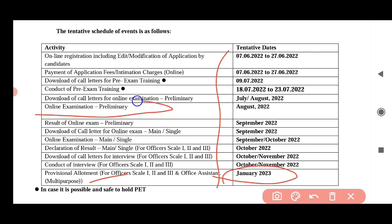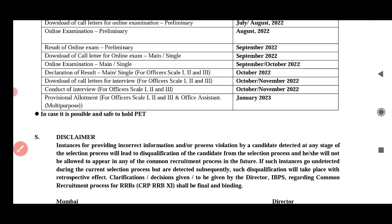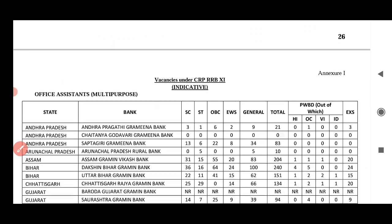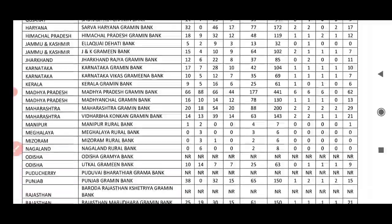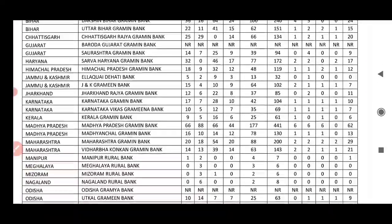You can get the preliminary exam. The preliminary exam is on August 23. The main exam is in September. The vacancy is about 1840.